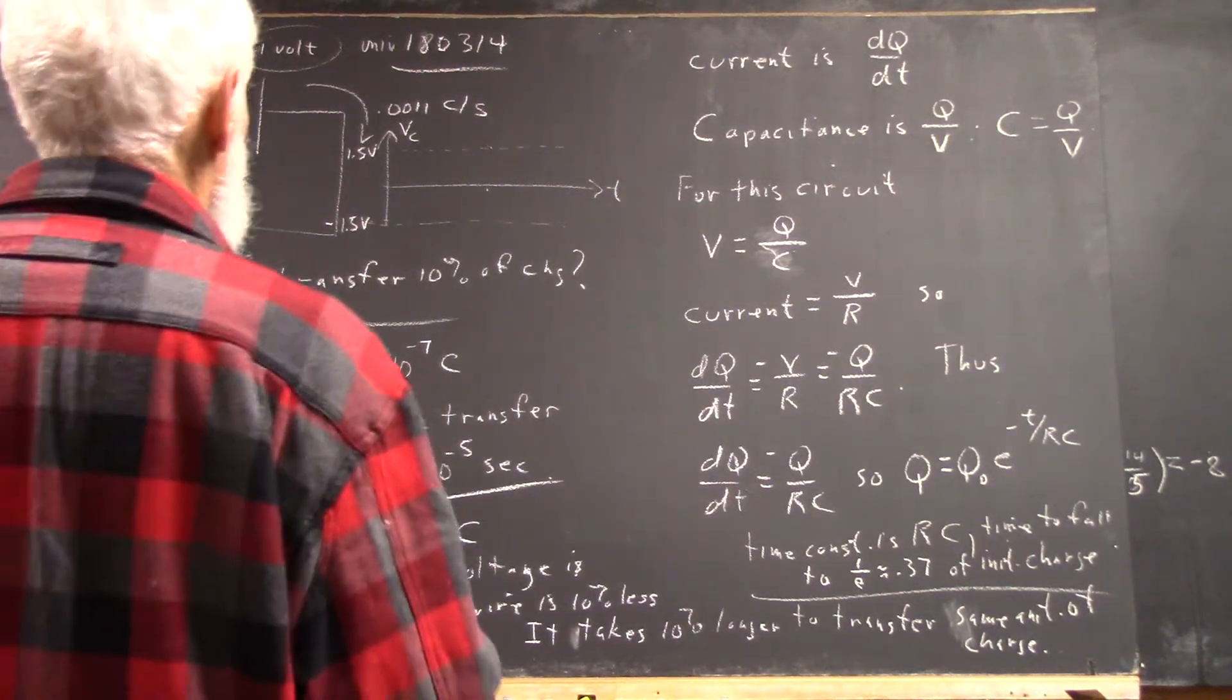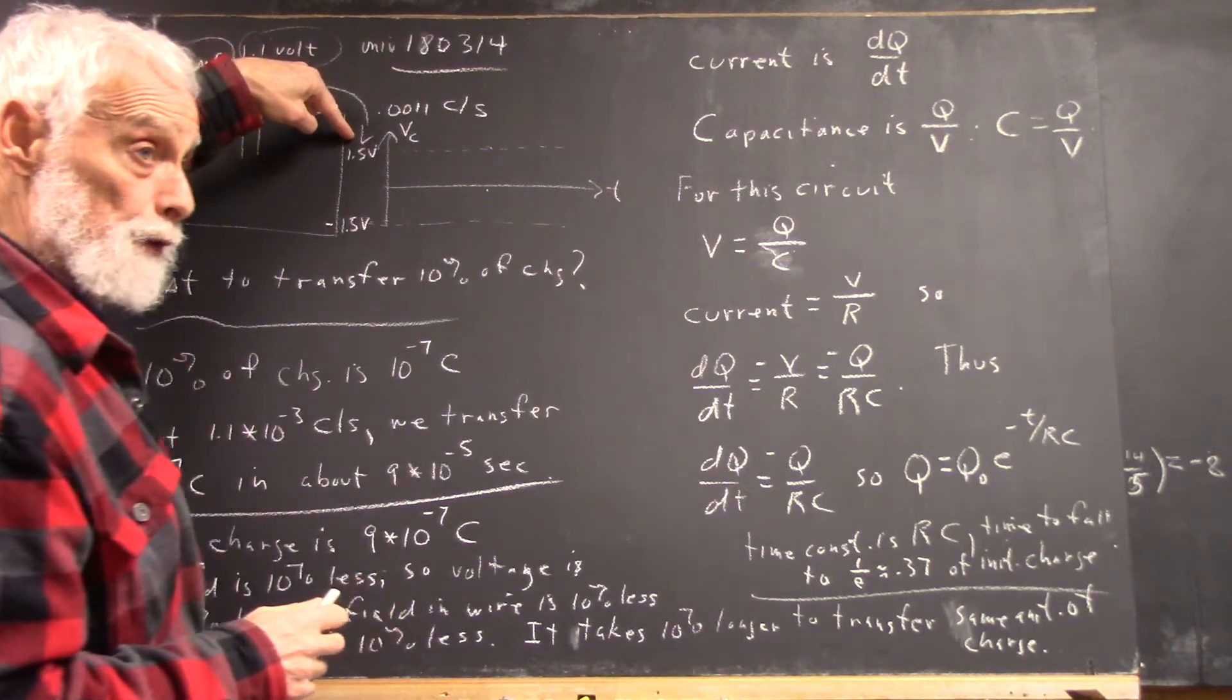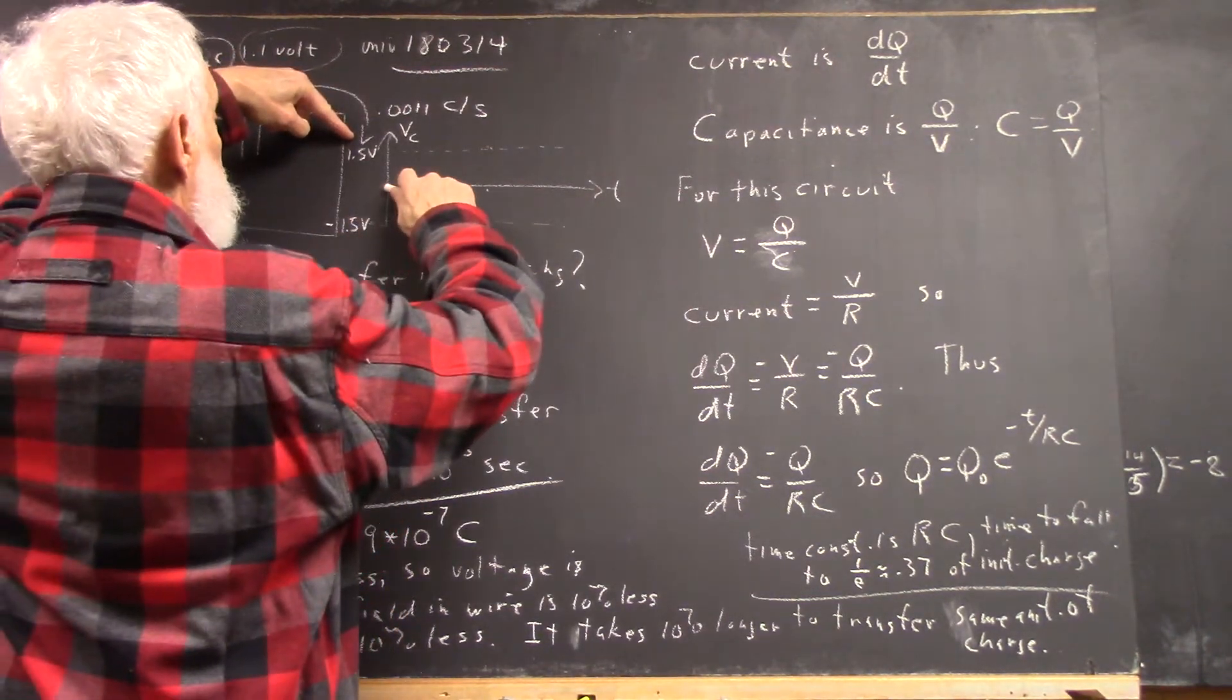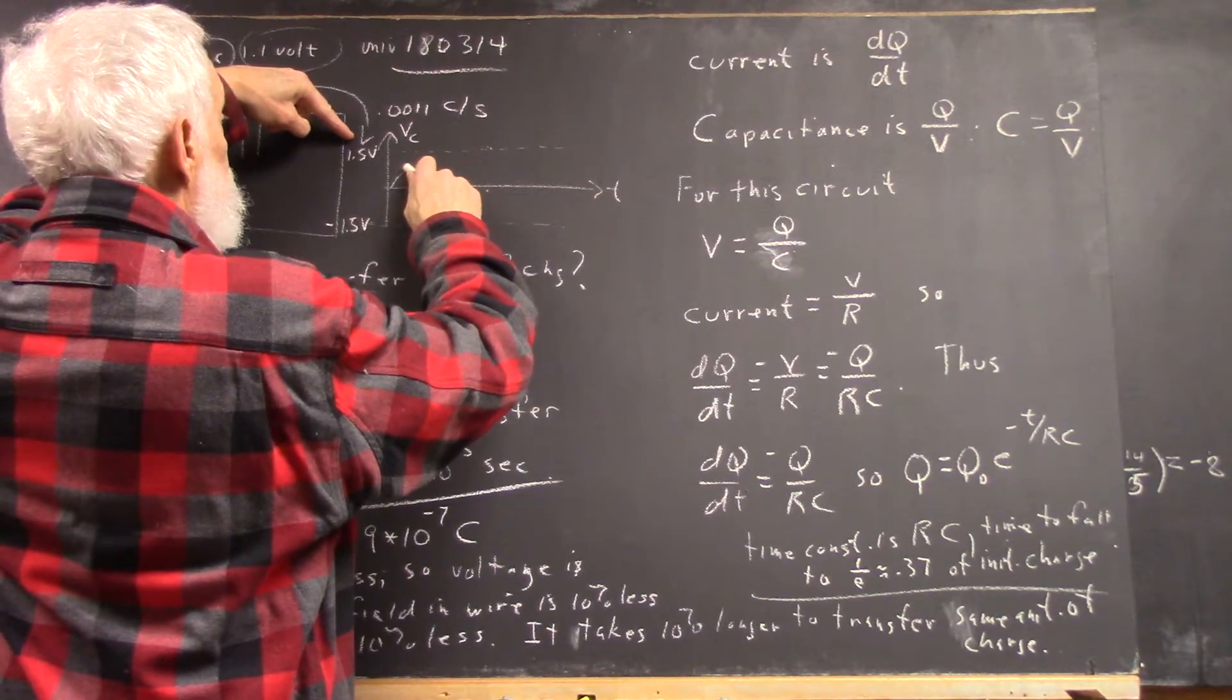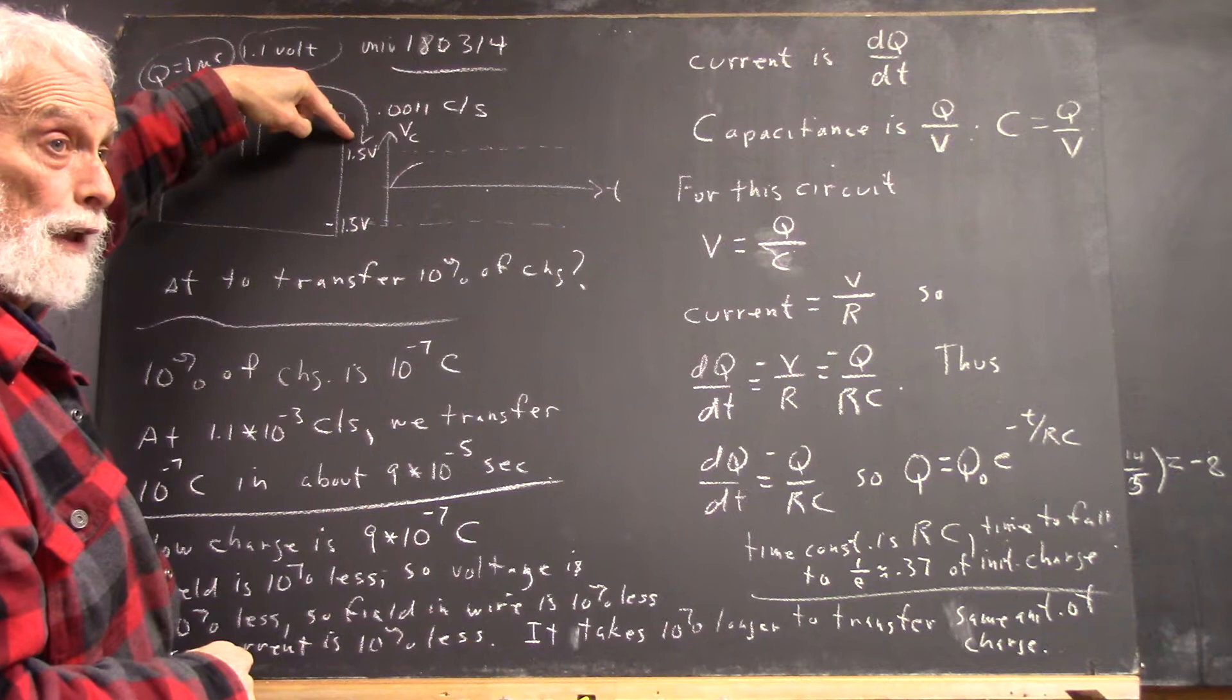What we'll do in the lab is we'll have a capacitor. We'll slap 1.5 volts of charge on it for a few seconds. What's going to happen is the capacitor is going to approach this voltage exponentially until we decide to switch it.